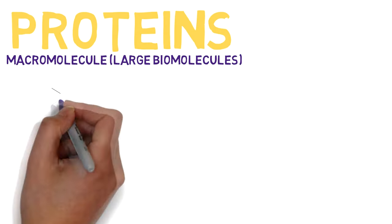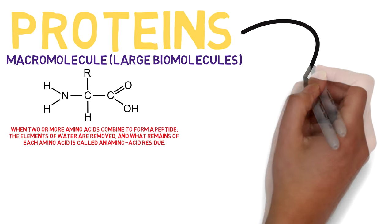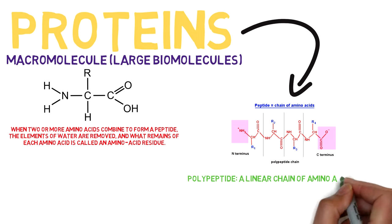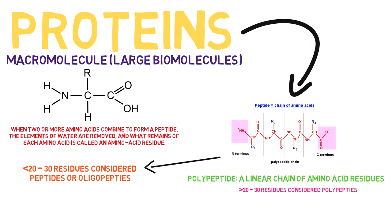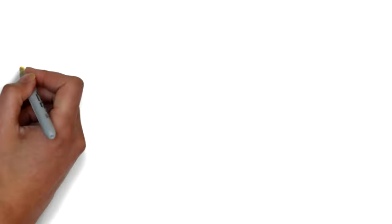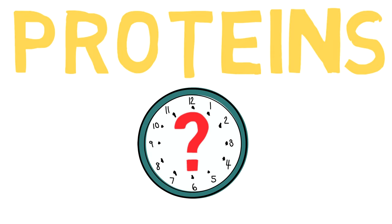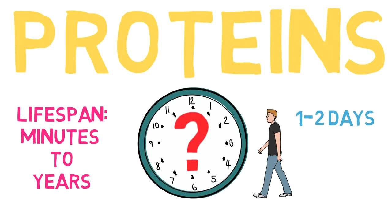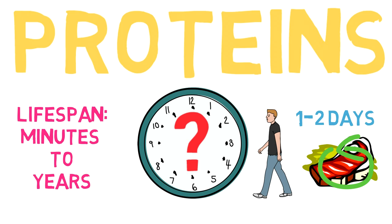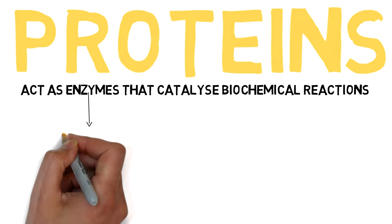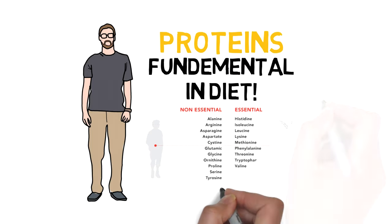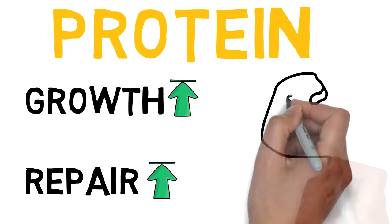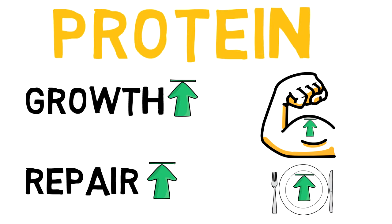Proteins are macromolecules, also known as large biomolecules, made up of one or more long chains of amino acid residues. A protein is made up of at least one long polypeptide, a linear chain of amino acid residues. Short polypeptides containing less than 20 to 30 residues are considered as peptides or oligopeptides and not as proteins. Once a protein is formed, it will exist for a period of time ranging from minutes to years, but most proteins in human cells last around one to two days before becoming degraded and recycled through a process known as protein turnover. Many proteins act as enzymes that catalyse biochemical reactions and are incredibly important to metabolism. In humans, proteins are fundamental in the diet to provide essential amino acids that cannot be synthesised within the body itself. Protein is commonly known for its role in the growth and repair of our bodies, and those looking to build muscle mass often favour higher amounts of protein in their diet for this very reason.